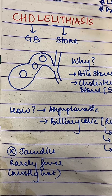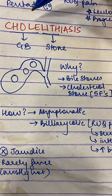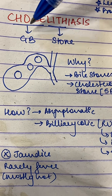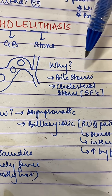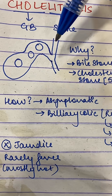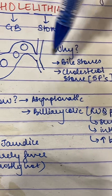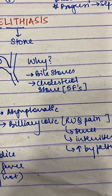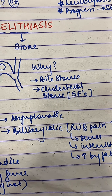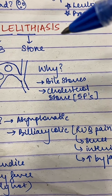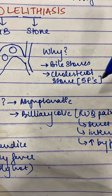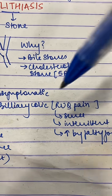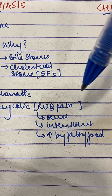Let's start simple — cholelithiasis. Breaking down the name: 'chole' refers to the gallbladder, and 'lithiasis' means stones. Why does it happen? Too much hemolysis, too much heme, too much bilirubin — and you get bile stones. Cholesterol stones are very common. It usually happens in the five F's: fat, female, faulty diet, fertile, and family history. Mostly it's asymptomatic, but when it presents, it presents with biliary colic — classically right upper quadrant pain.